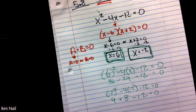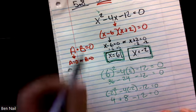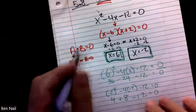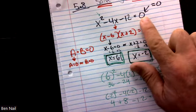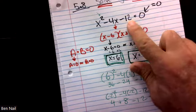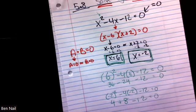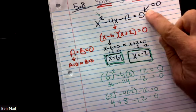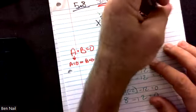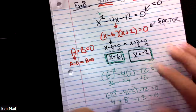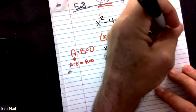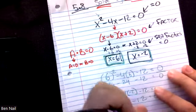To summarize solving by factoring: step one, it has to equal zero. If your problem does not equal zero, get everything on one side. Once set equal to zero, factor to turn this into a multiplication problem so we can use the zero product property. Then set your factors equal to zero and solve.